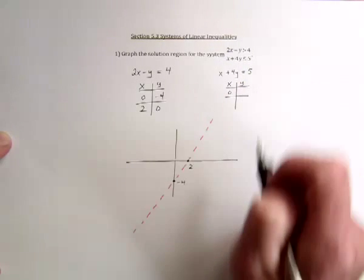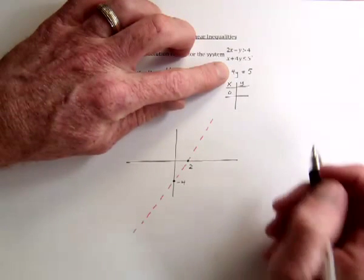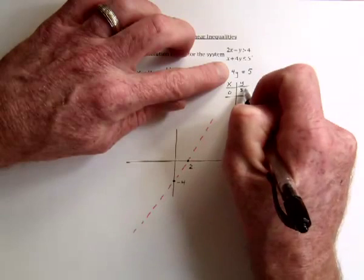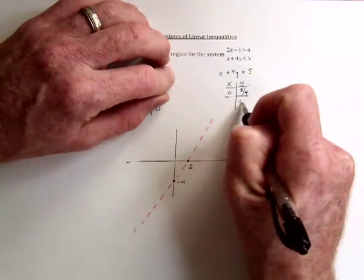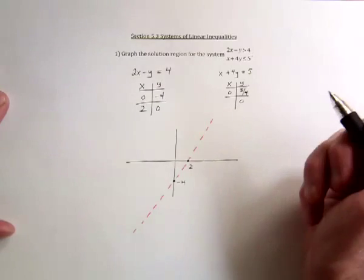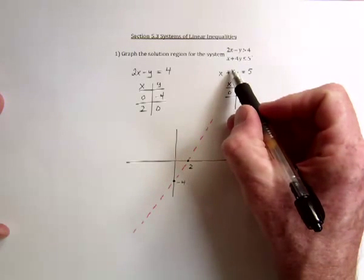And again, have x equal to 0, and y is equal to 5 fourths, or 1 and a quarter. And when y is equal to 0, this middle term would be gone. So 1x would equal 5.